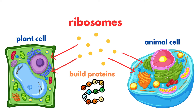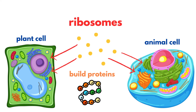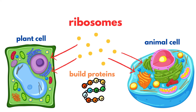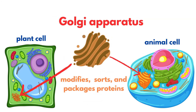Once proteins are made, they need to be processed and shipped to their final destinations, and that's where the Golgi apparatus comes in. This organelle modifies, sorts, and packages proteins and lipids, preparing them for transport within or outside the cell. Both plant and animal cells have a Golgi apparatus.